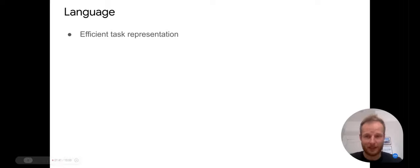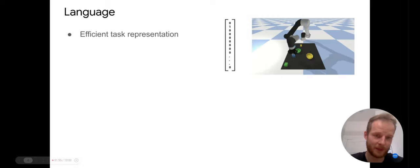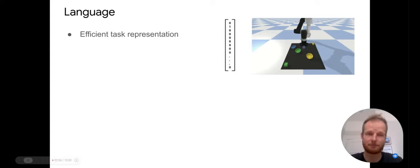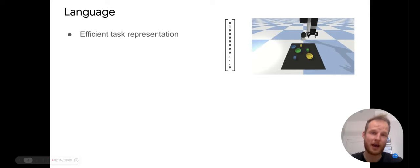First, language provides a really efficient task representation. If we have a robot and we want to ask it to put all the blocks in the corners of the table counterclockwise, usually how we would represent that task is as a one-hot vector encoding describing that particular task. If we were to ask a different task — stack the blocks on top of each other — it would be a completely different one-hot vector, a completely orthogonal representation, and we would ask the neural network to figure out how these two relate through learning.